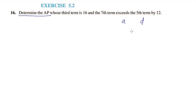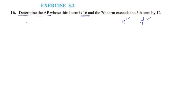In an AP, we add the common difference D to the first term to get the second term, add D to the second term to get the third term, and so on. The given condition is that A3 is equal to 16.